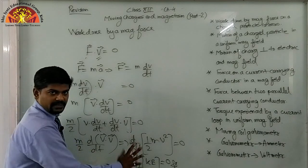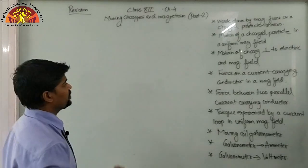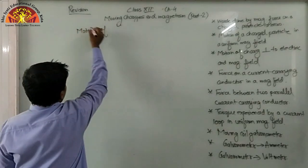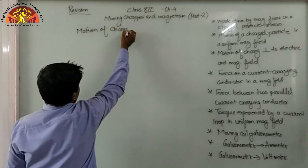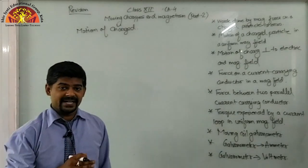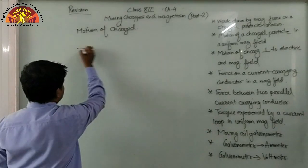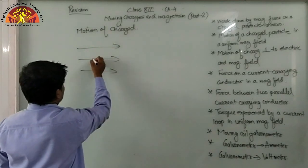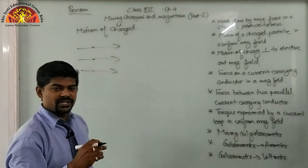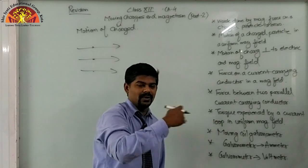Now, motion of a charged particle in a uniform magnetic field. Suppose a charged particle is moving in the direction of the magnetic field — continuously moving along that same direction. In this case, there will be no deflection; the particle will keep moving forward along the magnetic field with no force acting on it.